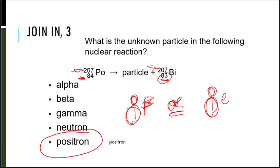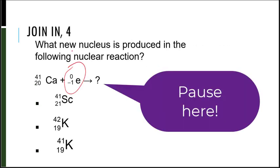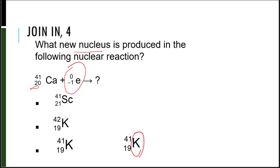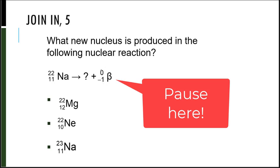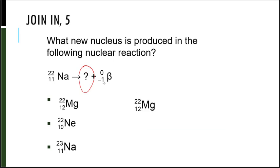We can write that as a beta particle or electron — we know it's a positive electron with no mass. Here's an electron capture. Can you figure out what new nucleus is produced? It's got to be potassium (K), because 20 minus 1 would be 19, and 41 plus 0 is 41. Look at the periodic table — K has an atomic number of 19. Here's a beta decay: we know that it has a negative 1 charge and mass 0. What new nucleus is produced? It must be magnesium because 12 minus 1 is equal to 11, and 22 is on the left, so 0 plus 22 would be 22.